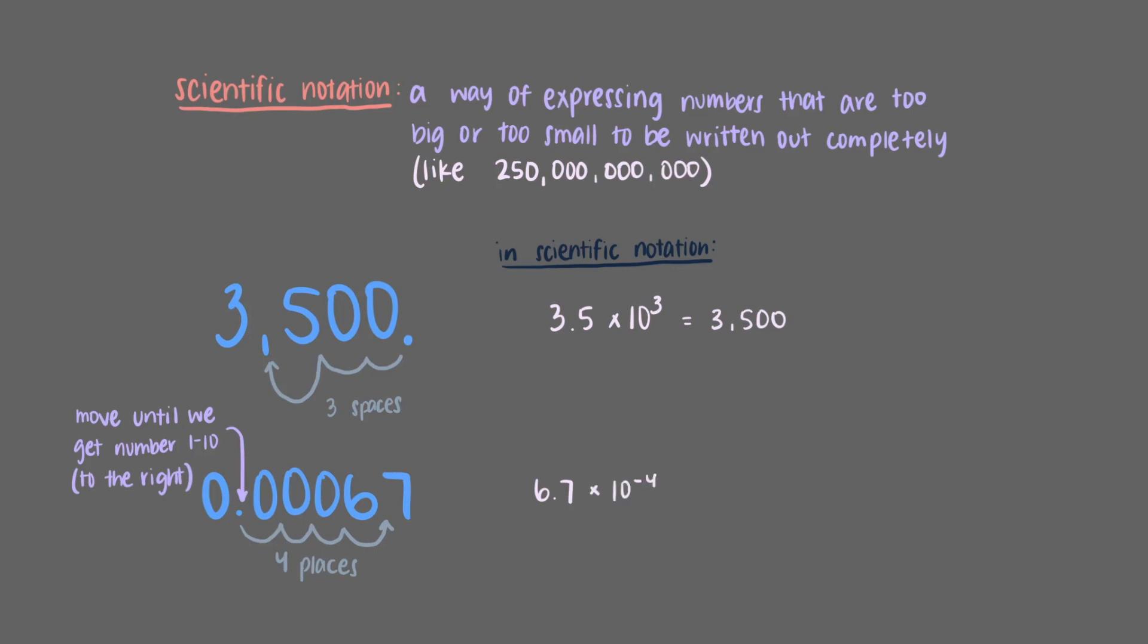To turn 6.7 into 0.00067, we need to multiply 6.7 by 10 to the minus fourth power, which tells us that our scientific notation expression is equal to the number we started with.